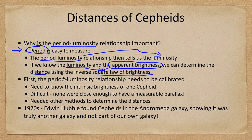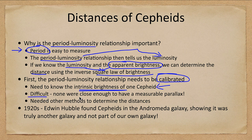However, we first need to calibrate this. We need to know the distance and the intrinsic brightness of one Cepheid to calibrate the period-luminosity relationship. This was a problem — none of these are close enough to have a measurable parallax, so we need other methods to determine the distances, and we will look at other methods coming up. But it is a good way to measure stars and works out even to the Andromeda Galaxy.